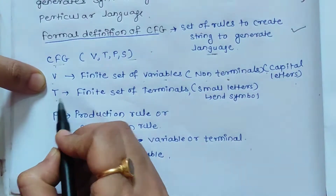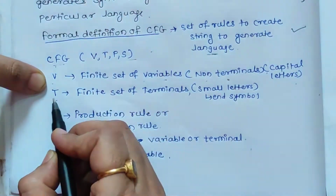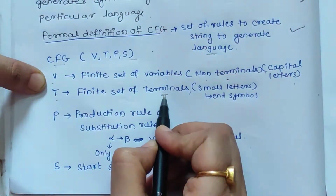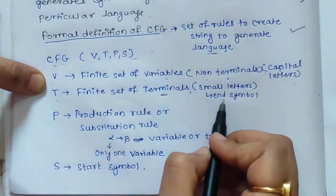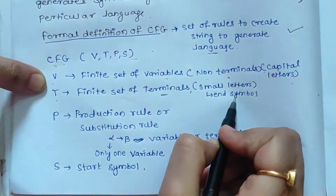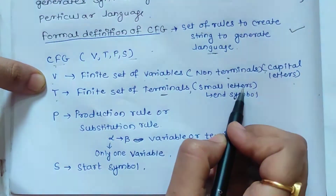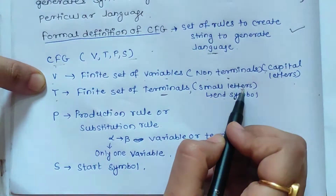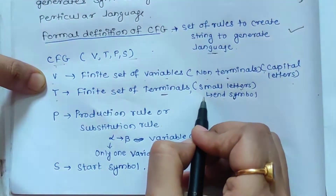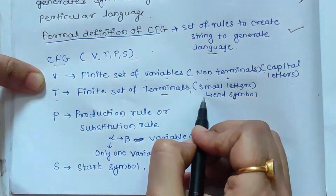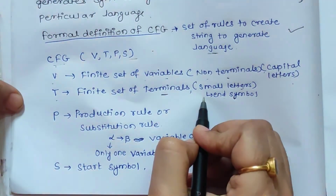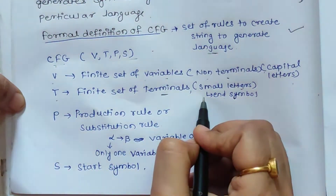Next is T. T stands for a finite set of terminals. Terminals are also called end symbols and are represented with small letters. After replacing non-terminals with terminals, there is no further replacement possible. We can see this with the help of examples later on.